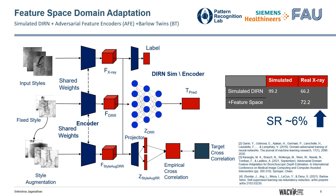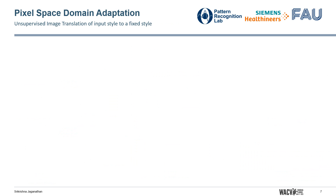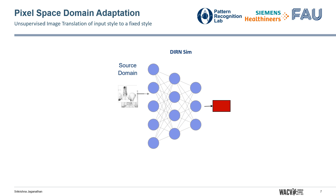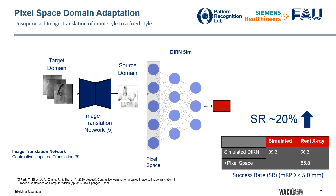We see a 6% improvement in success rate with our Feature Space Domain Adaptation technique. We also use Pixel Space Domain Adaptation to improve the performance of our simulated registration network by transferring from the target domain to the source domain using an image translation network trained using contrast-to-one pair translation. This improves our performance by 20% on real X-ray images.